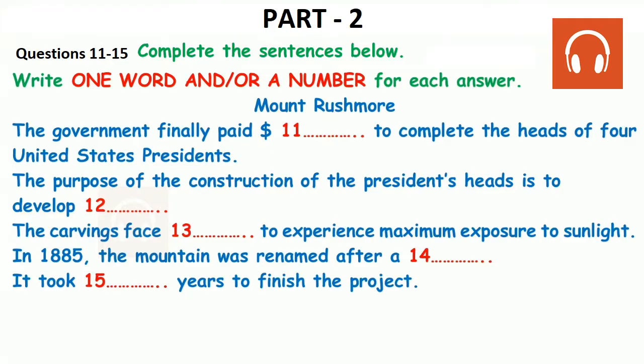Each head is 18 meters tall, which is taller than the heights of 11 people combined. The sculptor initially wanted to depict the presidents from head to waist, but due to a lack of funding, the construction had to stop before this vision could be realized. In total, it cost the government $1 million to sculpt the heads at Mount Rushmore.